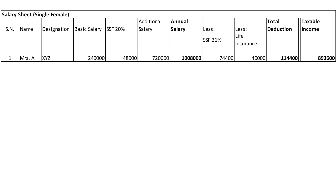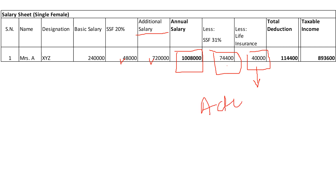The computation of income: basic salary per annum is two lakh forty thousand; SSF at twenty percent is forty-eight thousand; additional salary, allowances, or bonus amounts to seven lakh twenty thousand; hence the annual income is ten lakh eight thousand. The total SSF contribution — employer plus employee at thirty-one percent — is seventy-four thousand four hundred. For life insurance, the maximum deduction allowed is forty thousand per annum, though the actual amount paid is fifty thousand, so only forty thousand can be claimed. Total deductions come to one lakh fourteen thousand four hundred.